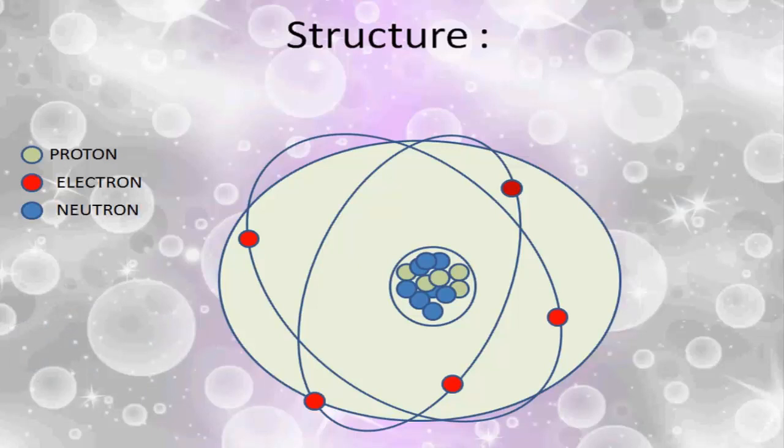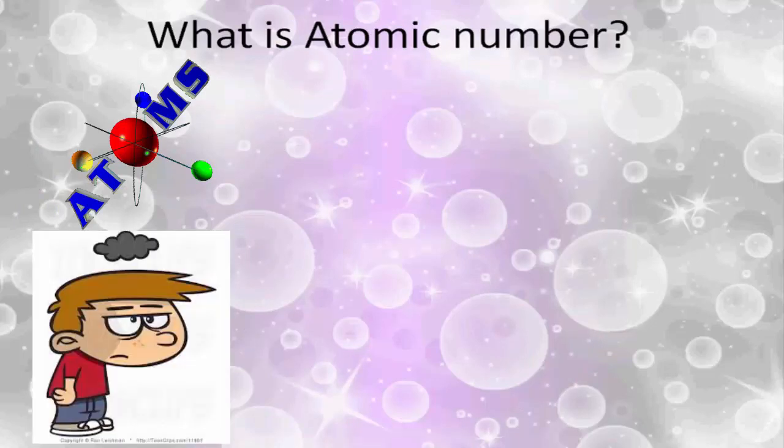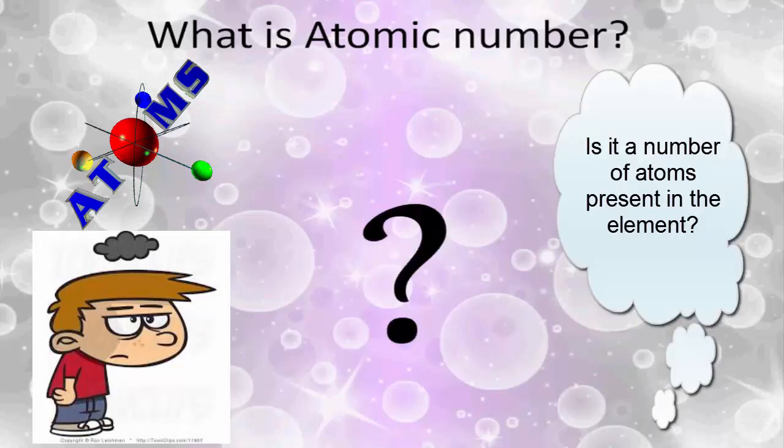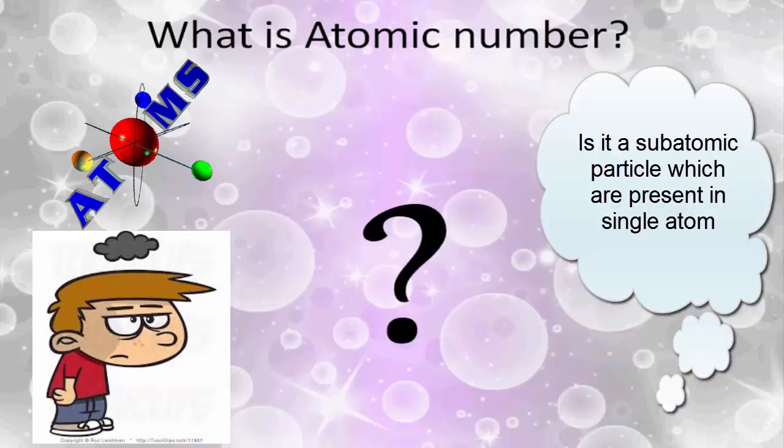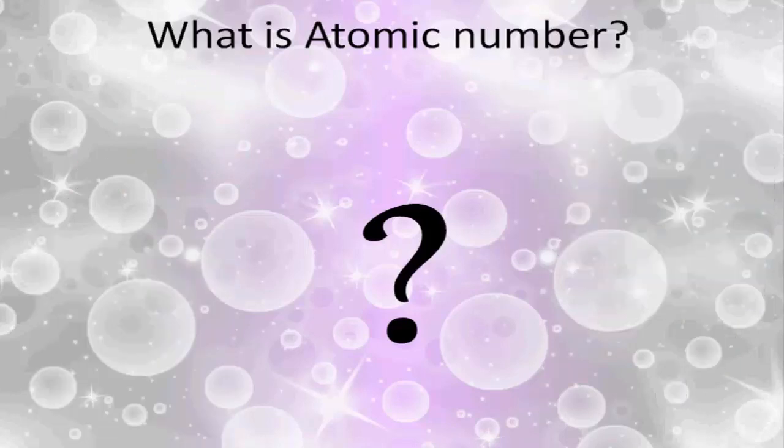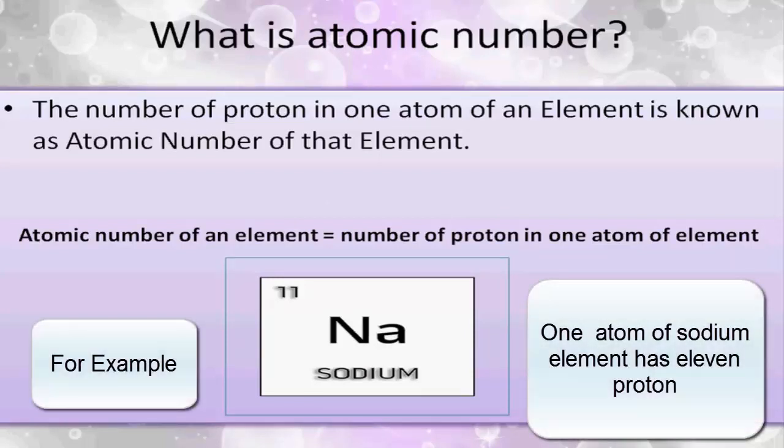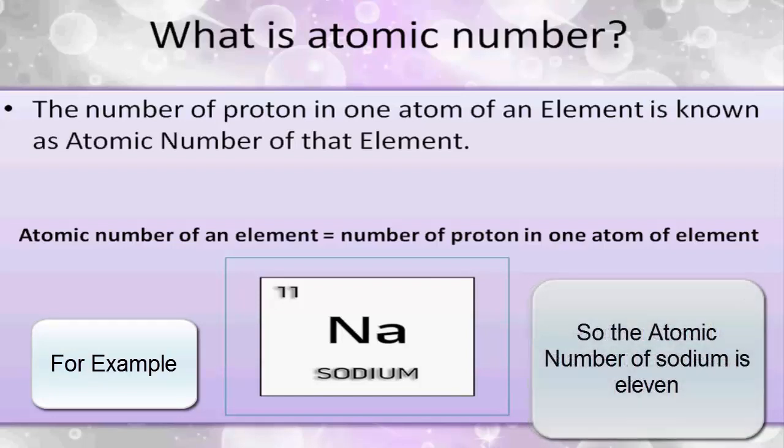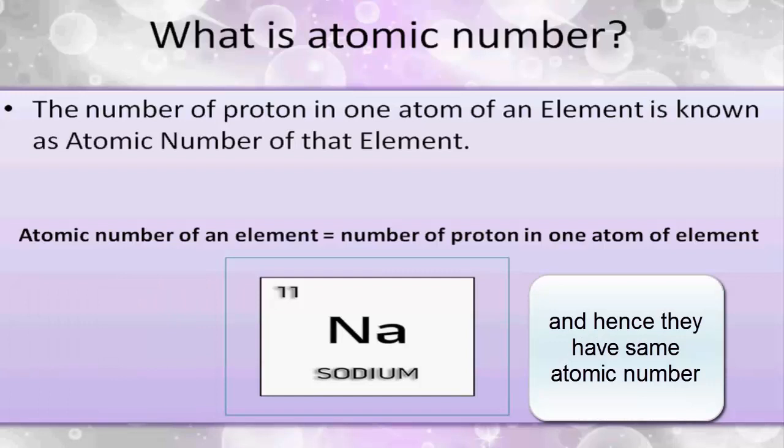So now we shall discuss what is atomic number. The atomic number is nothing but the number of protons in one atom of an element. For example, one atom of sodium element has 11 protons in the nucleus, so the atomic number of sodium is 11. All the atoms of the same element have the same protons in the nucleus, and hence they have the same atomic number.